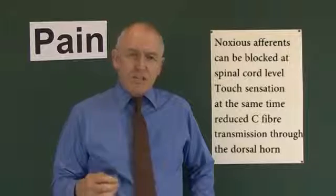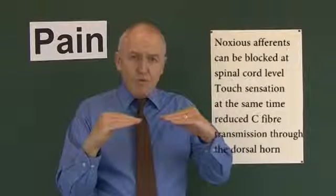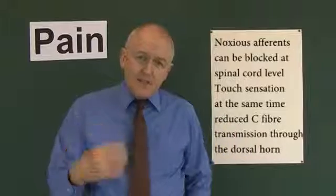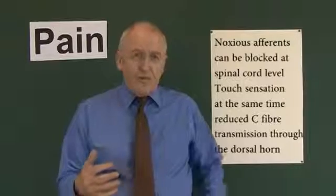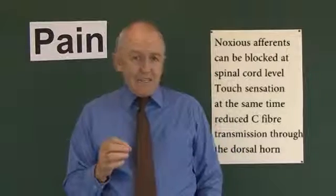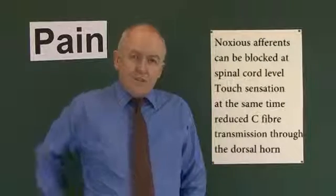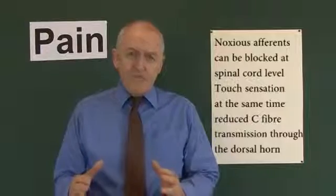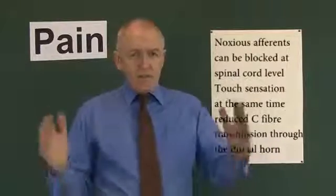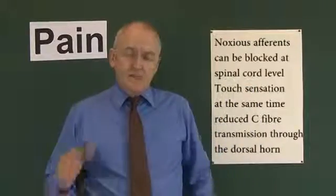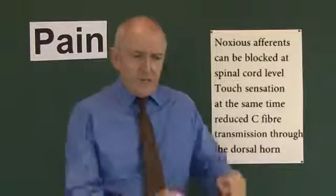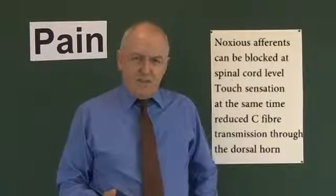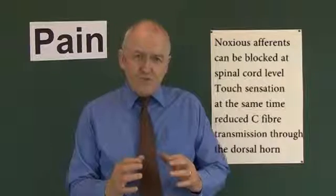By rubbing, you're generating lots of touch sensory afferent impulses going into the central nervous system. The idea is that if there's lots of touch sensation going through a particular level — through a particular spinal nerve — then the pain impulses can't get through at the same time. Imagine you're in a room with only one door, and lots of large people all decide to leave at once — they block the door. That's what gate control theory is saying.